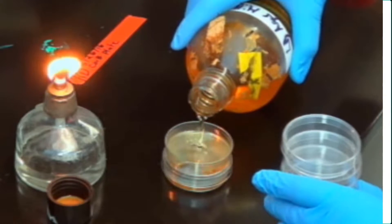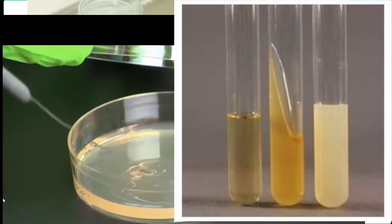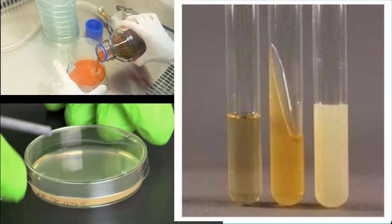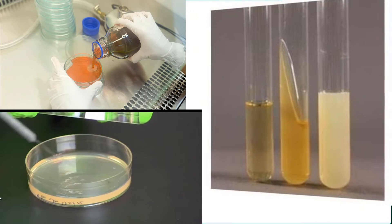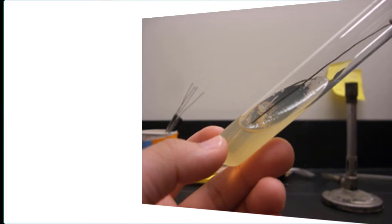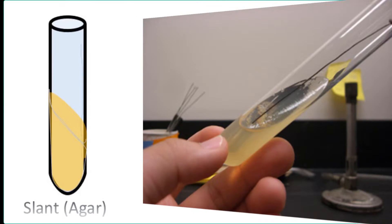Warm agar can be poured into petri dishes to form petri plates or agar plates or poured into test tubes. And you can even keep those test tubes at a slanted angle as it solidifies so that you can get slant tubes or simply slants.